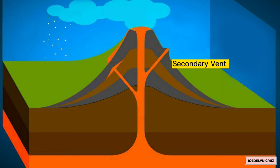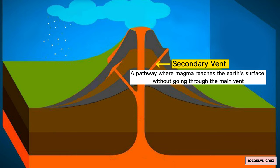Secondary Vent. Secondary Vent is a pathway where magma reaches the Earth's surface without going through the main vent.